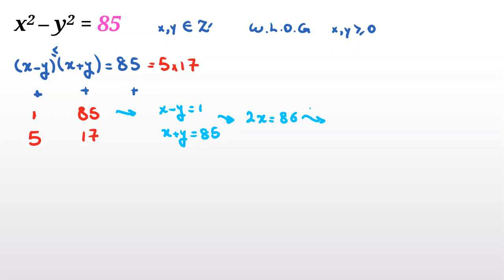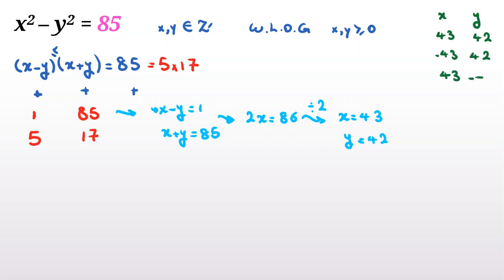Case 1: x minus y equals 1 and x plus y equals 85. Adding gives 2x equals 86, so dividing both sides by 2 gives x equals 43. Substituting back, y equals 42. So the solutions from this case are: (43, 42), (−43, 42), (43, −42), and (−43, −42) — four answers, since we initially considered x and y non-negative, but the equation is the same for plus or minus.